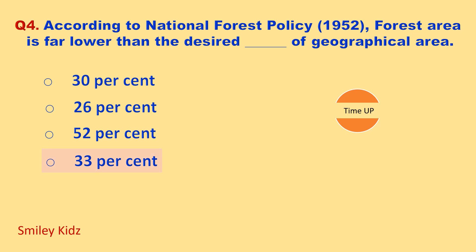Time up. The correct answer is 33 percent. According to the national forest policy in the year 1952, forest area is far lower than the desired 33 percent of geographical area.